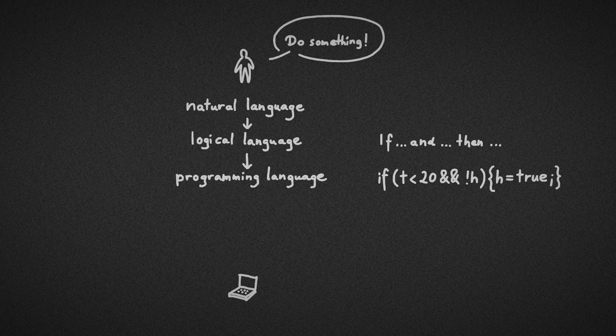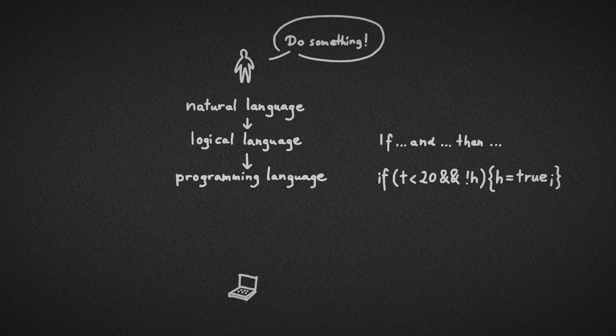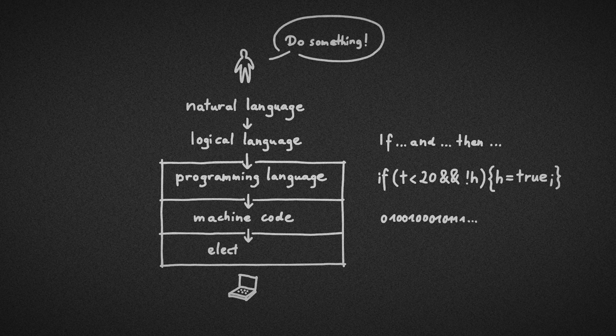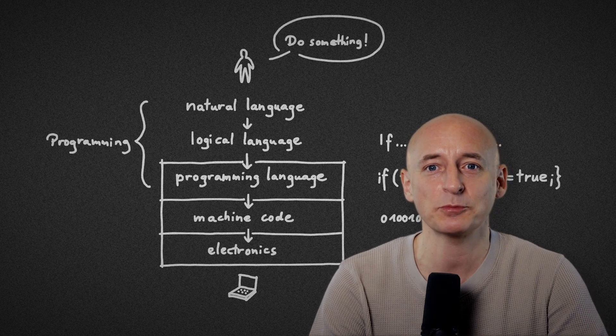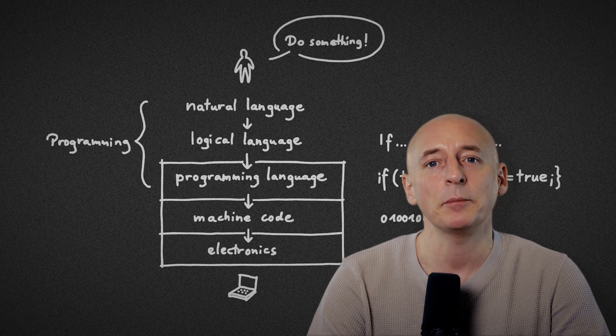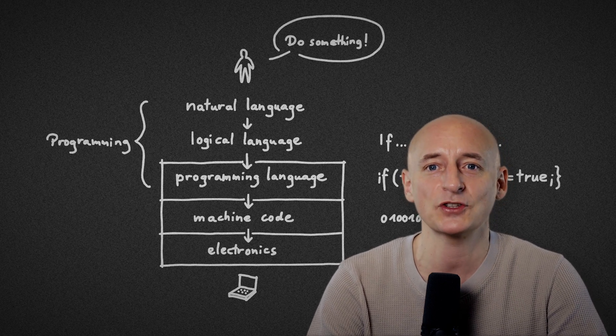After we've written our instructions in such a programming language, they are automatically translated into machine code. And this machine code controls the electronics of our computer. We call the first three steps of this process programming, because we can combine many instructions into a program.